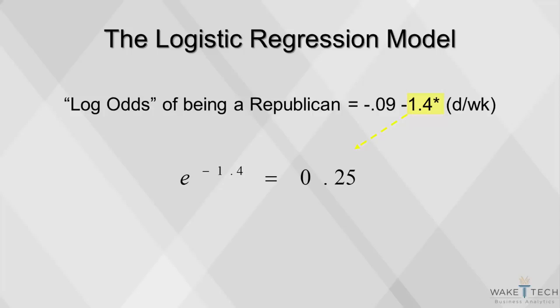Since the odds are less than 1, it tells us that the more you drink, the lower your odds of being Republican. All of these calculations can be done automatically in SAS, but it's important to understand the math behind what SAS is doing.